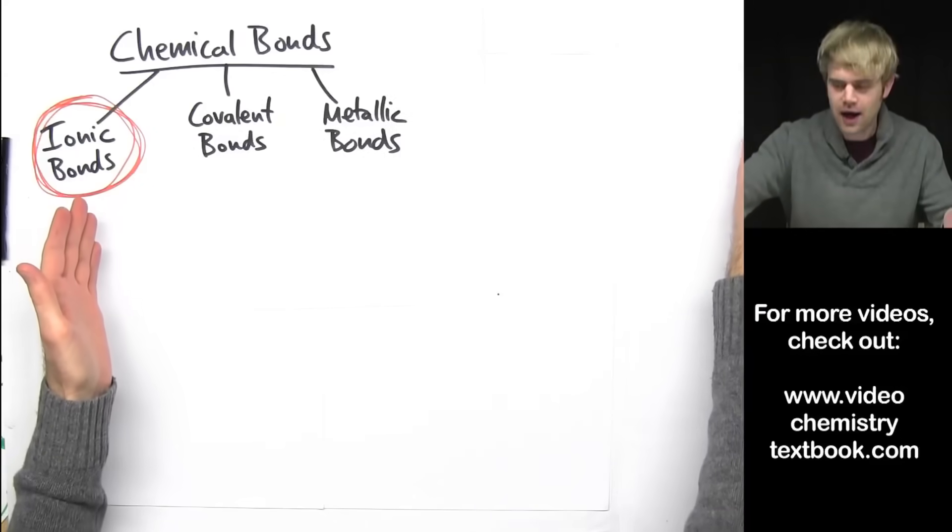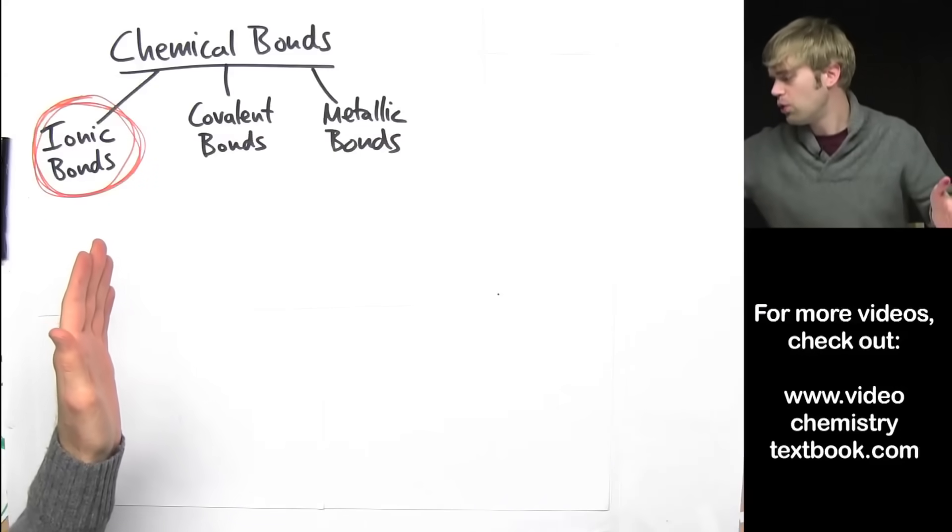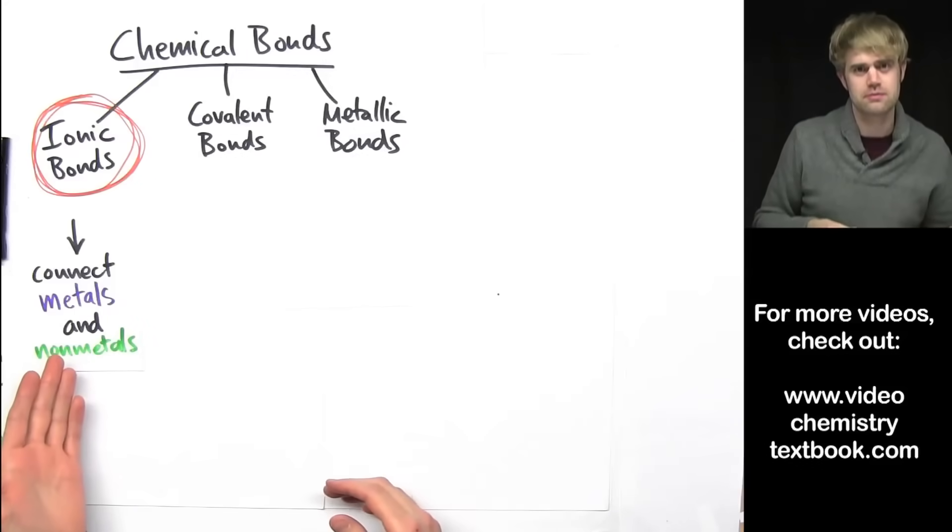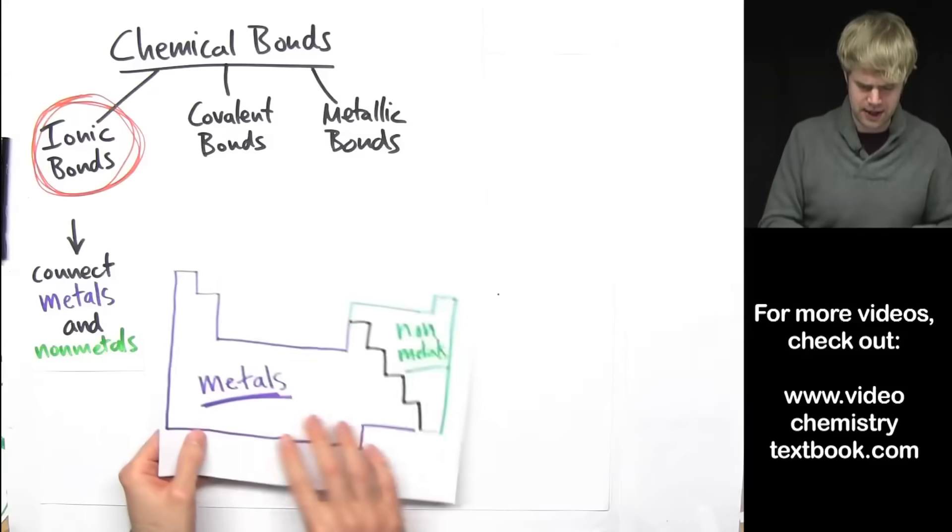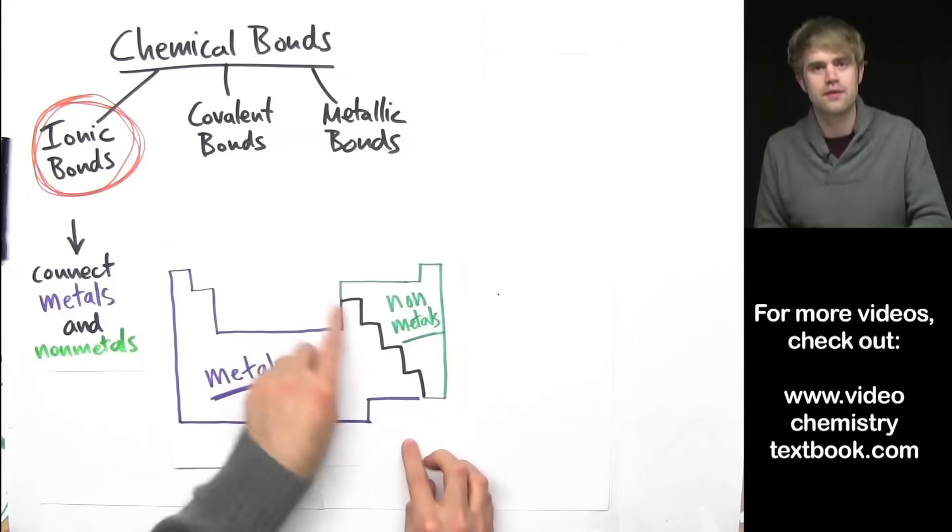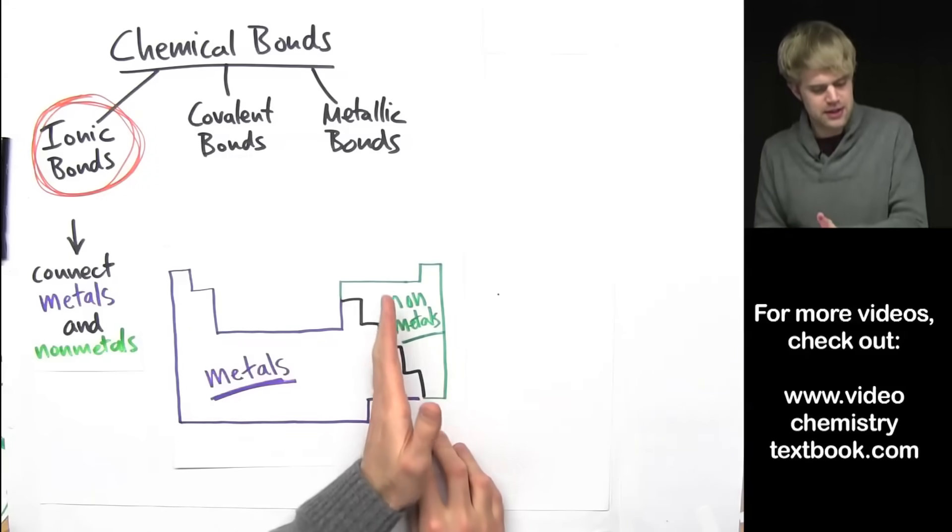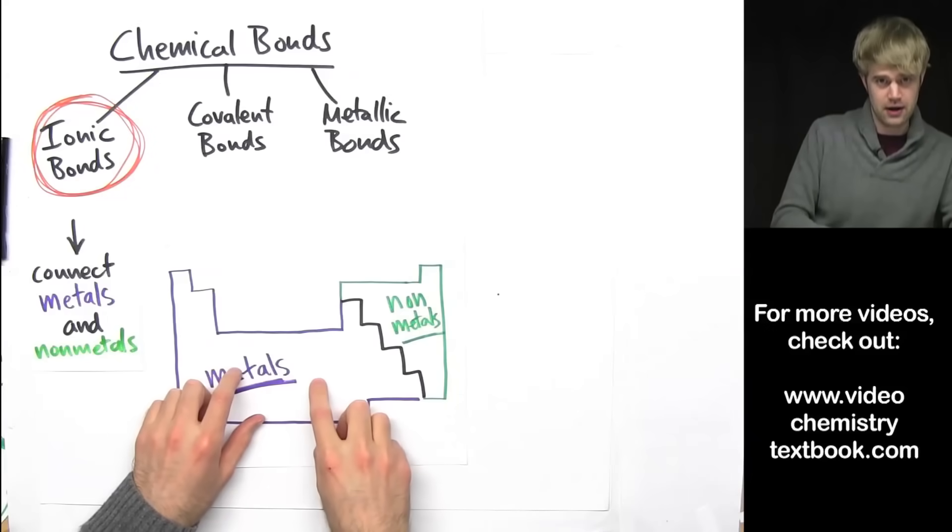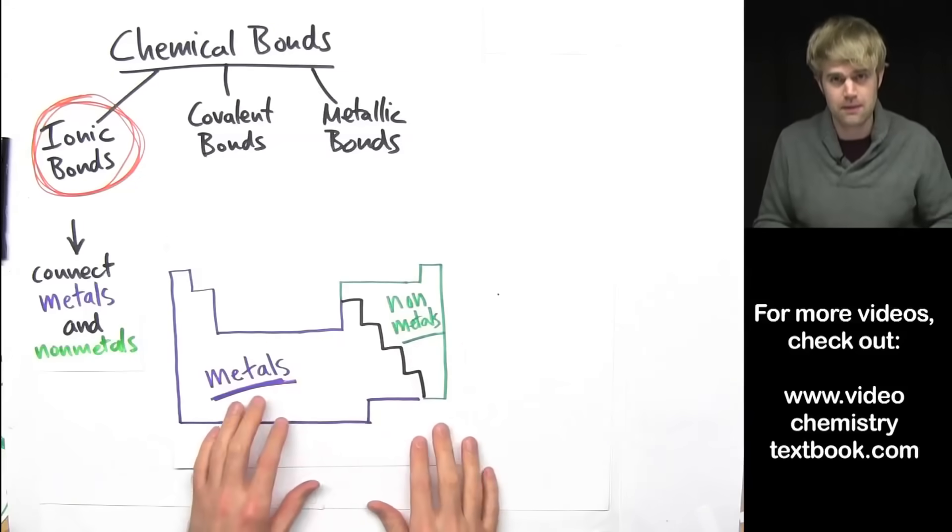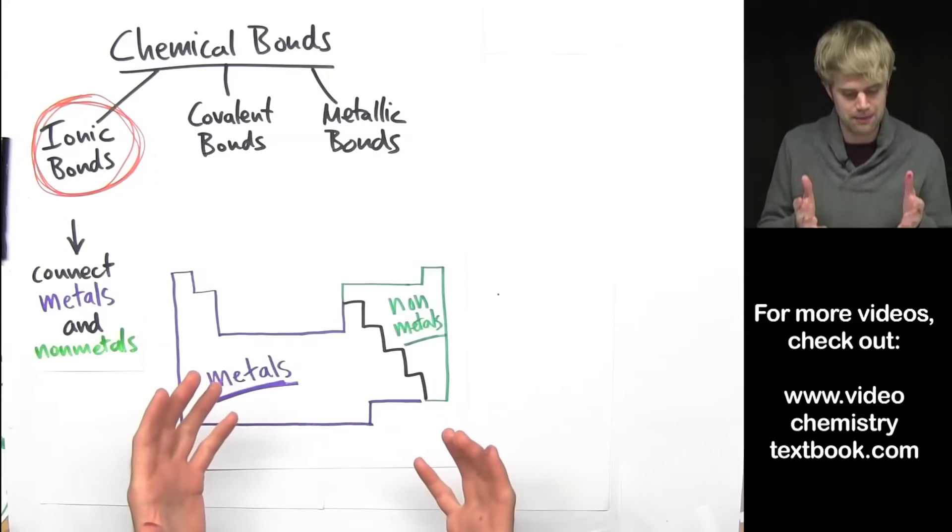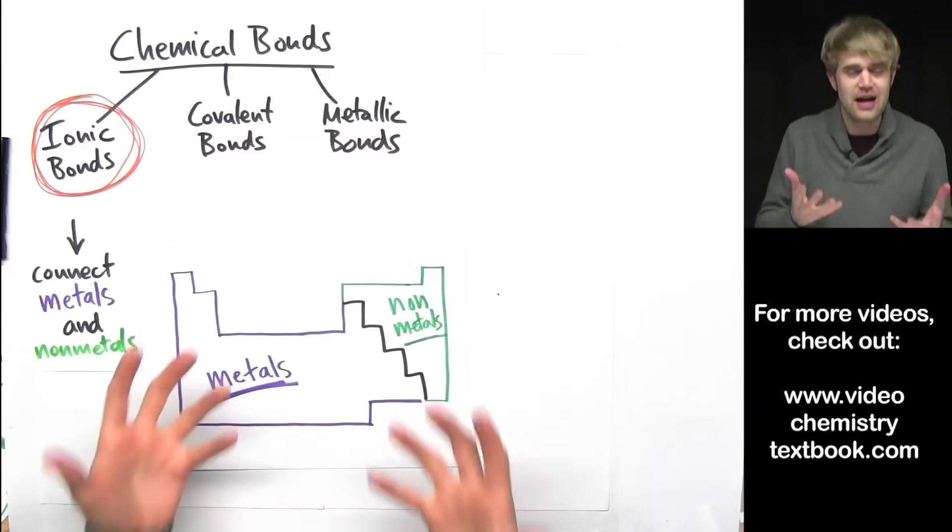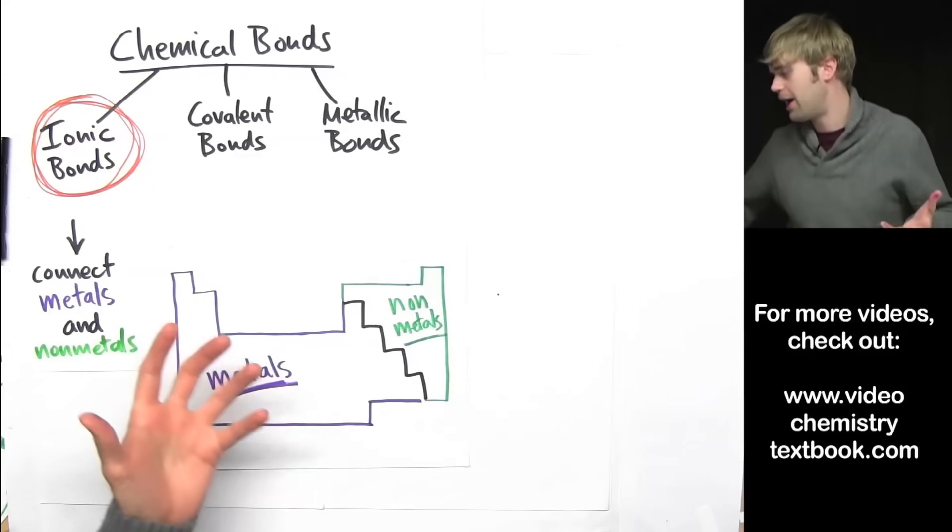Ionic bonds are the type of chemical bond that hold together metal atoms with nonmetal atoms. If you look at a periodic table, there's this big thick staircase over on this side and this staircase separates the metals which are all the elements on this side from the nonmetals which are most of the elements on this side. So, whenever we have a chemical that has a metal connected to a nonmetal, that's held together by ionic bonds.